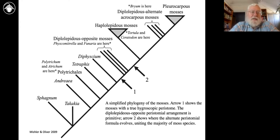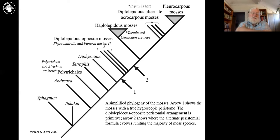Adaptive radiations that we would talk about in angiosperms happen in mosses too. We do happen to have a lot of branches that are old and hanging around also. The probably very deepest split in the whole moss phylogeny is Sphagnum — which, if you know any moss, you would know Sphagnum, because it's widely sold. You can buy bags of it in hardware stores and nurseries. It's very acidic and makes the environment more acidic.